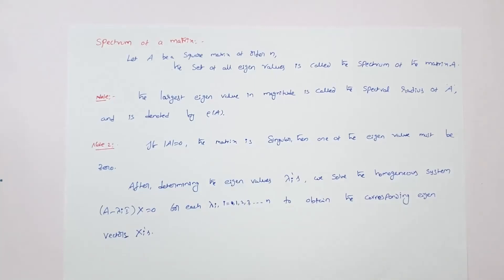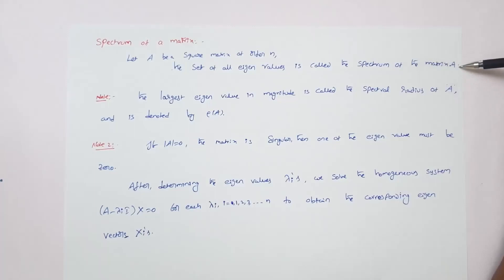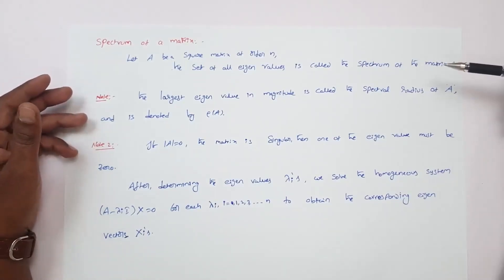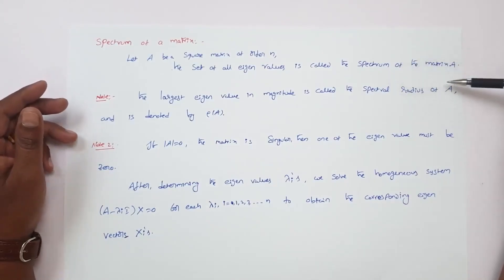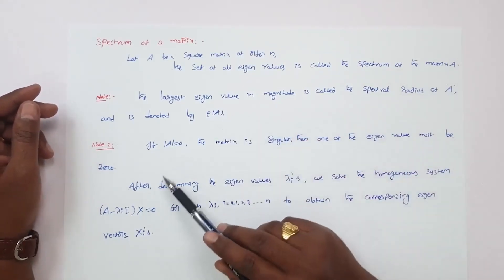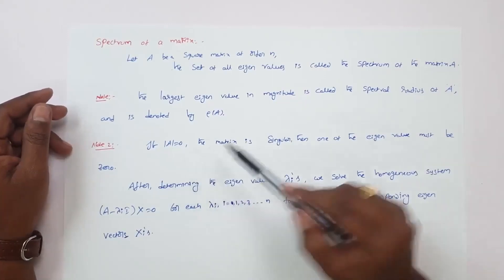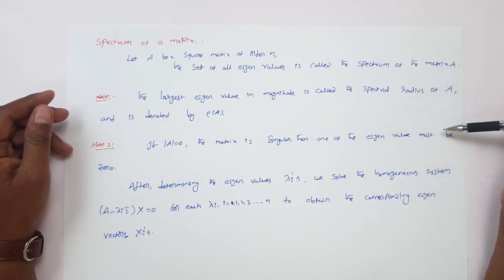Spectrum of a matrix: Let A be a square matrix of order n. The set of all eigenvalues is called the spectrum of the matrix A. Note: the largest eigenvalue in magnitude is called the spectral radius of the matrix A, denoted by rho of A. Note 2: if the determinant of A equals zero — that is, the matrix is singular — then one of the eigenvalues of A must be zero.